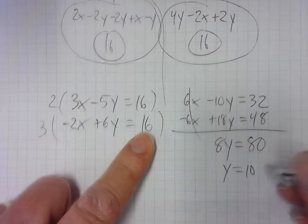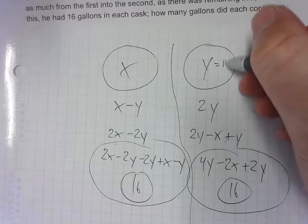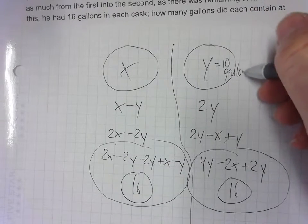So it's 10 gallons in the original cask up here. So Y is 10. It's 10 gallons.